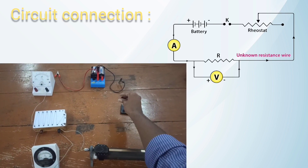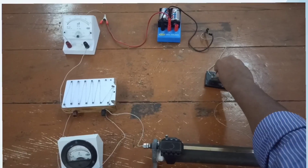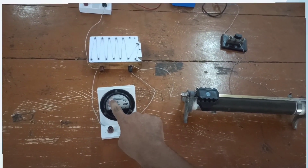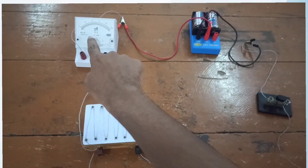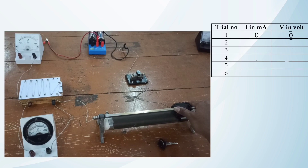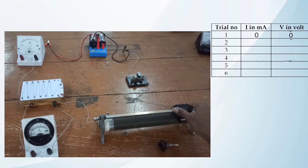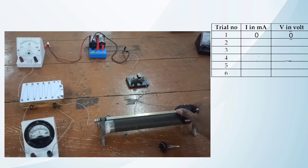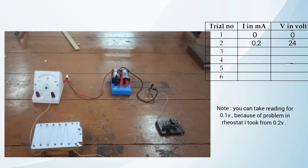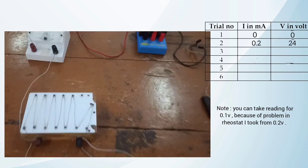Now closing the key, we can observe that the voltmeter shows zero deflection and the milliammeter also shows zero deflection. For zero voltage we have zero current. Now changing the voltage through the rheostat to 0.2 volt, we observe that the milliammeter shows a deflection at 24 milliampere.